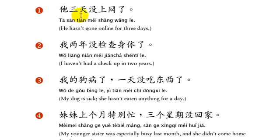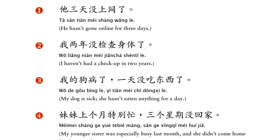他三天没上网了. He hasn't gone online for three days. So: 他, then the time — 三天 — then 没, then the verb 上网, then 了. The 了 is in parentheses here because it's optional.